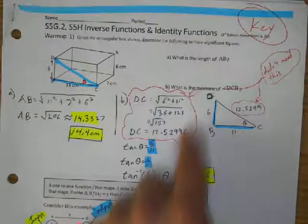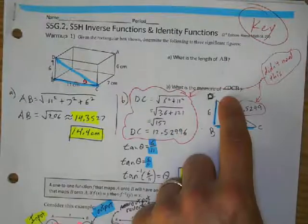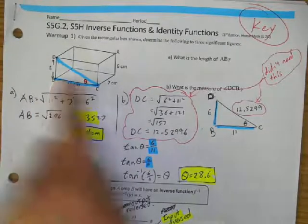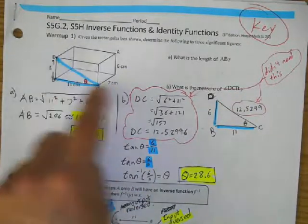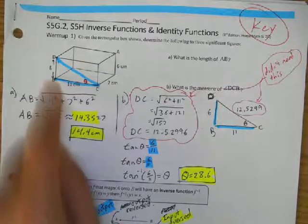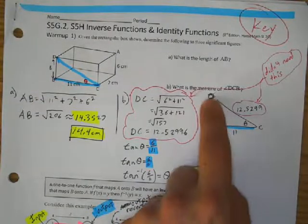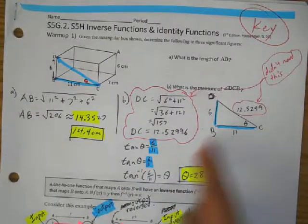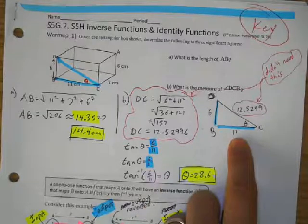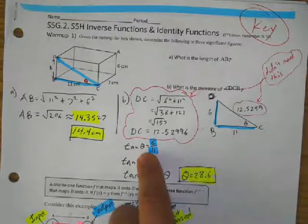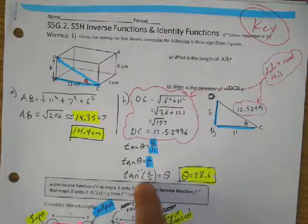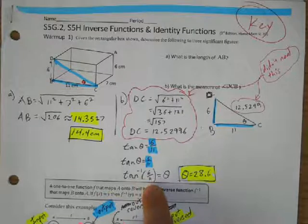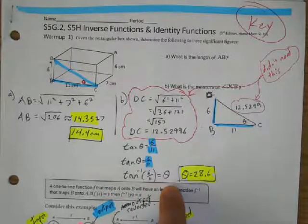I went through the process to find the length of DC, then realized all I needed was the 6 and the 11 to find the angle DCB, which is just the side of the box. Using the 6 and the 11, I can use tangent because I have the opposite and adjacent sides. So tangent theta equals 6 over 11, and the inverse tangent of 6 over 11 gives the angle.